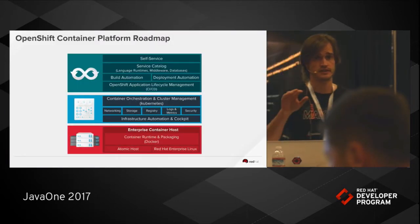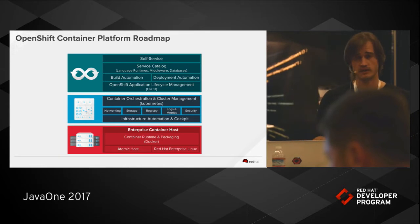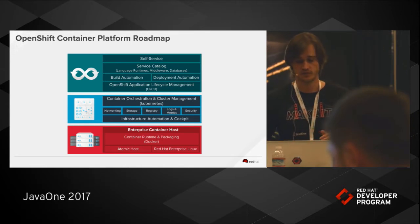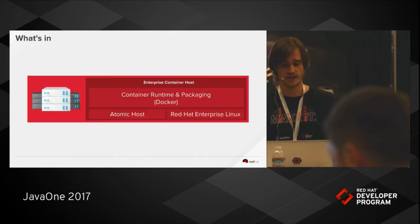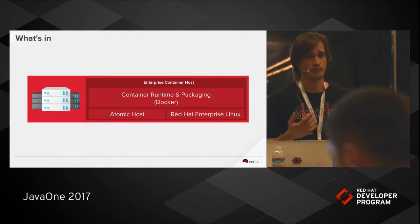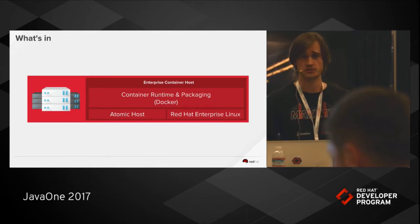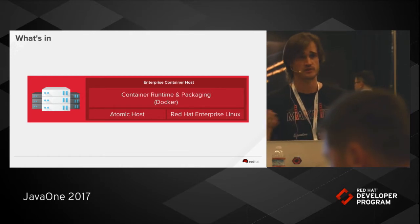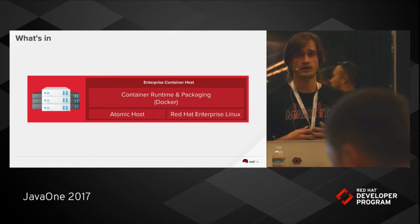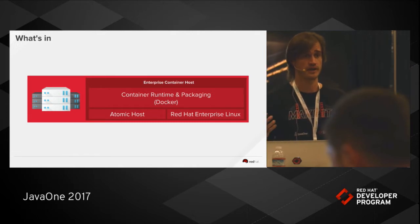For those who are using OpenShift right now, these are the layers that make the platform. So the first layer that we have is an operating system layer. OpenShift runs anywhere Linux runs — anywhere Red Hat Enterprise Linux or CentOS runs. That is the first layer that exists, and that's where your containers are running.